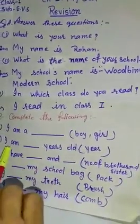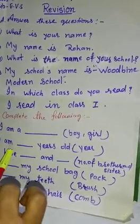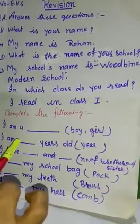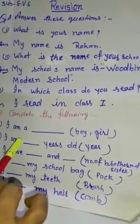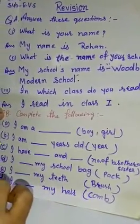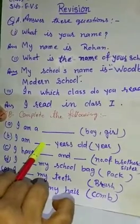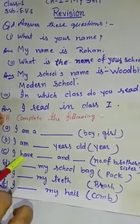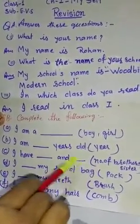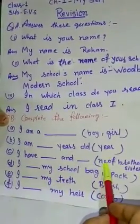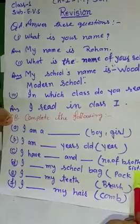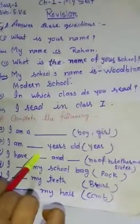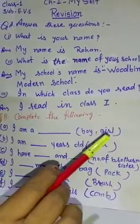आप कितने साल के हैं? आपको यहाँ पर year लिखना है — six year हैं या seven year हैं? Six हैं तो S-I-X लिखिएगा, seven हैं तो S-E-V-E-N लिखना है. I have ___ brothers and ___ sisters — यहाँ पर आपको number of brothers और sisters देना है. One brother हैं या two brothers हैं, कितने sisters हैं — यहाँ पर लिखना है.